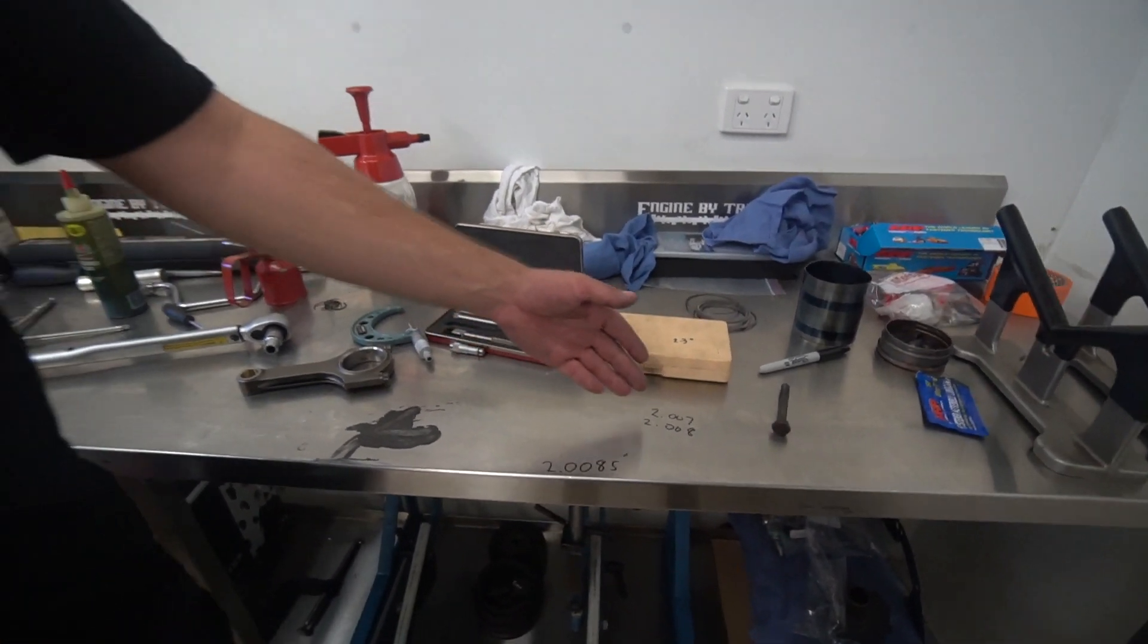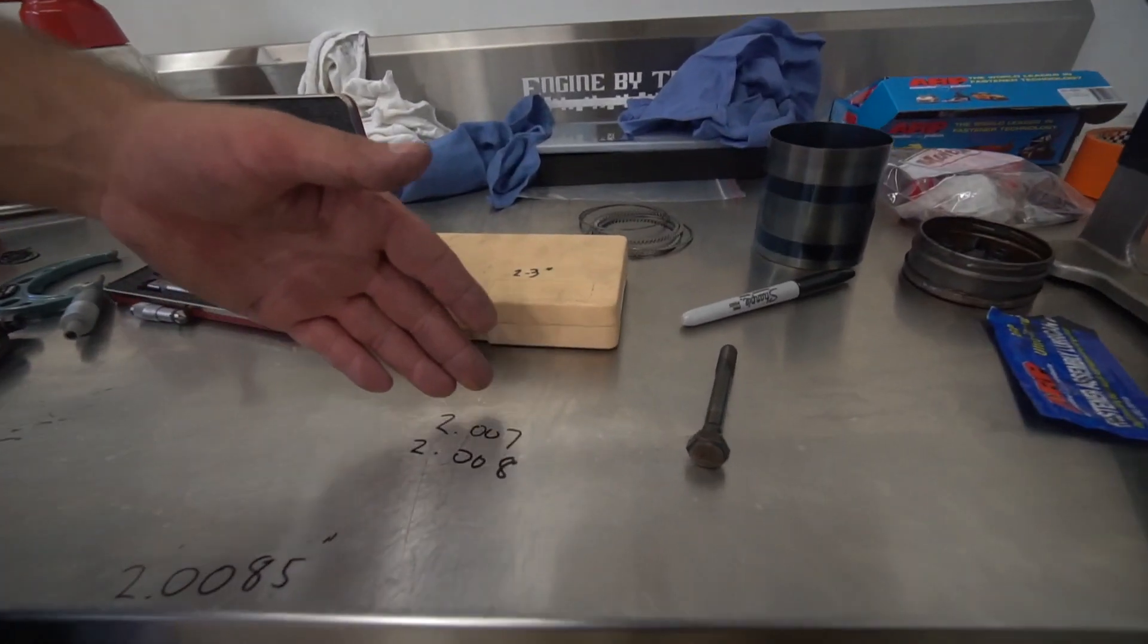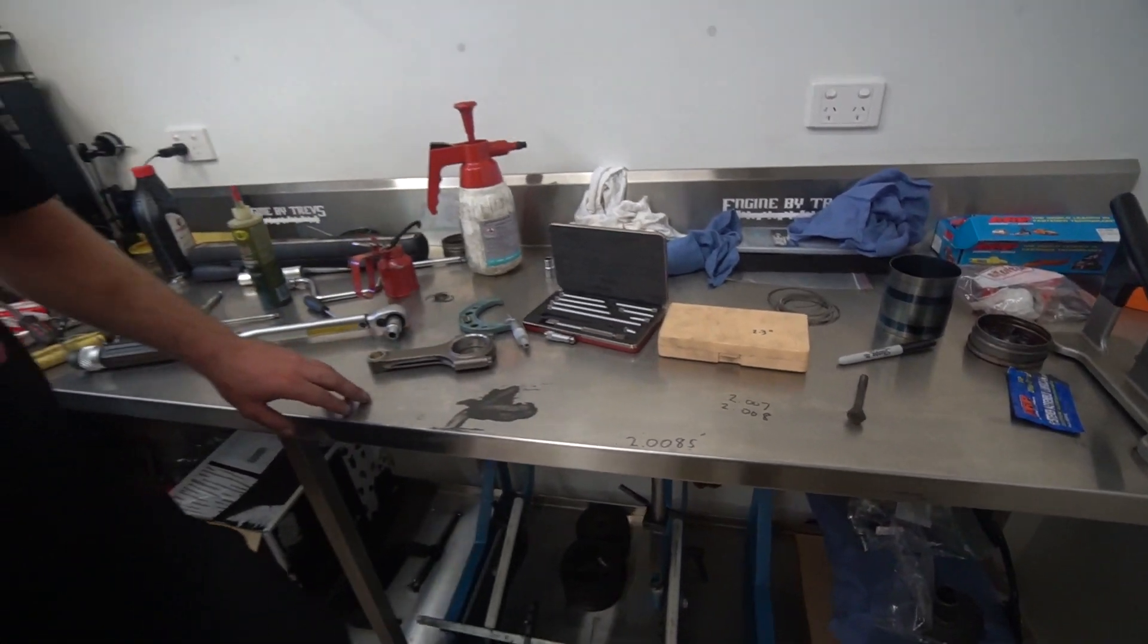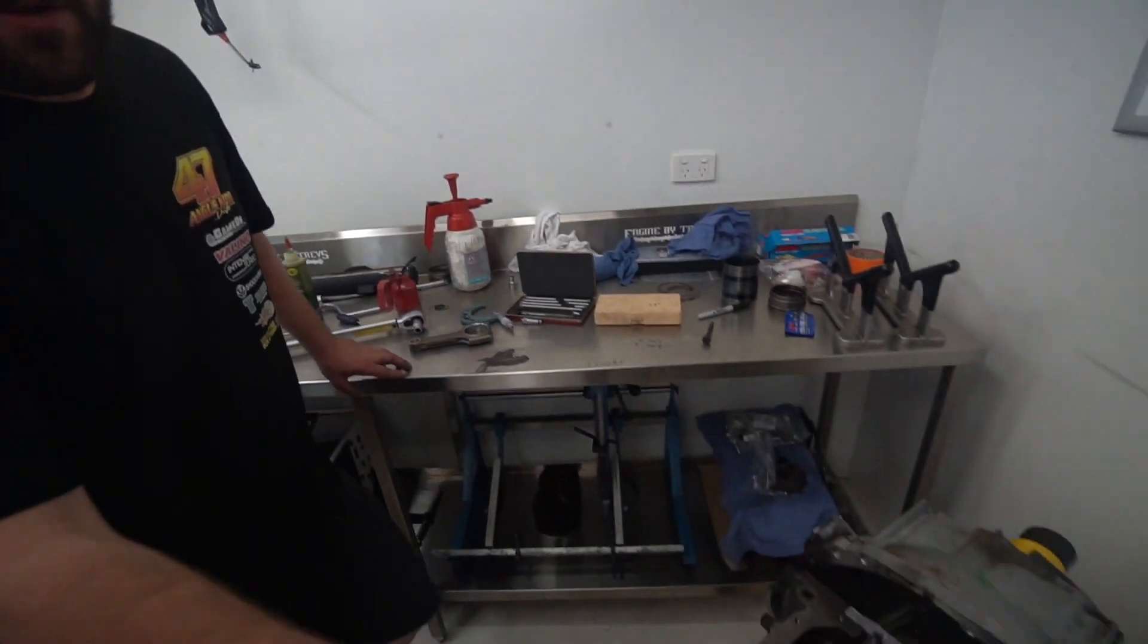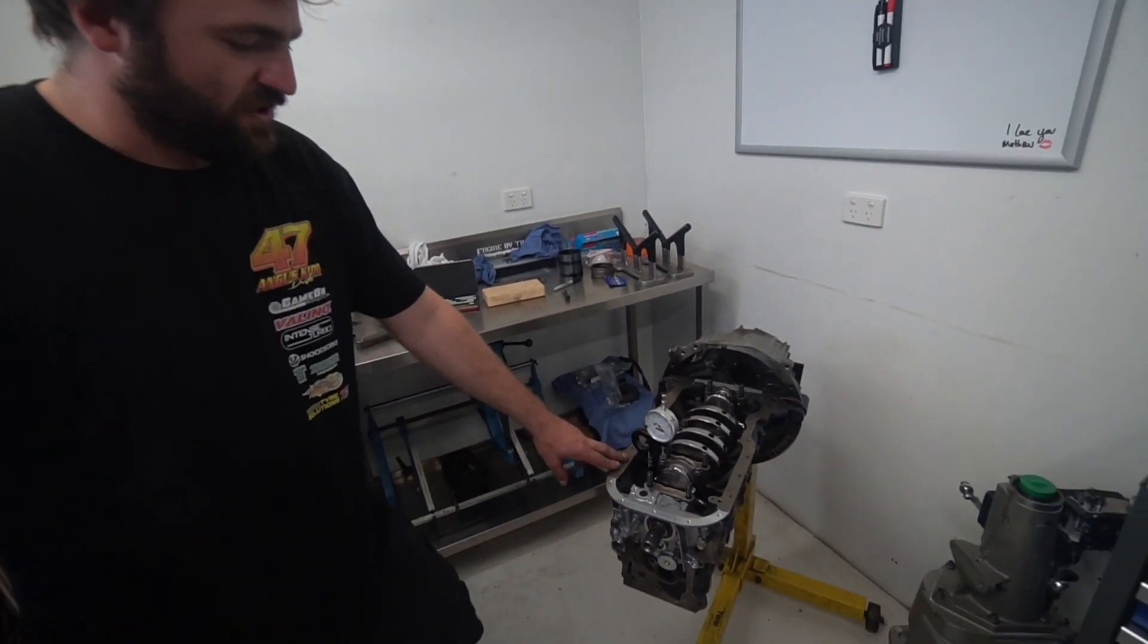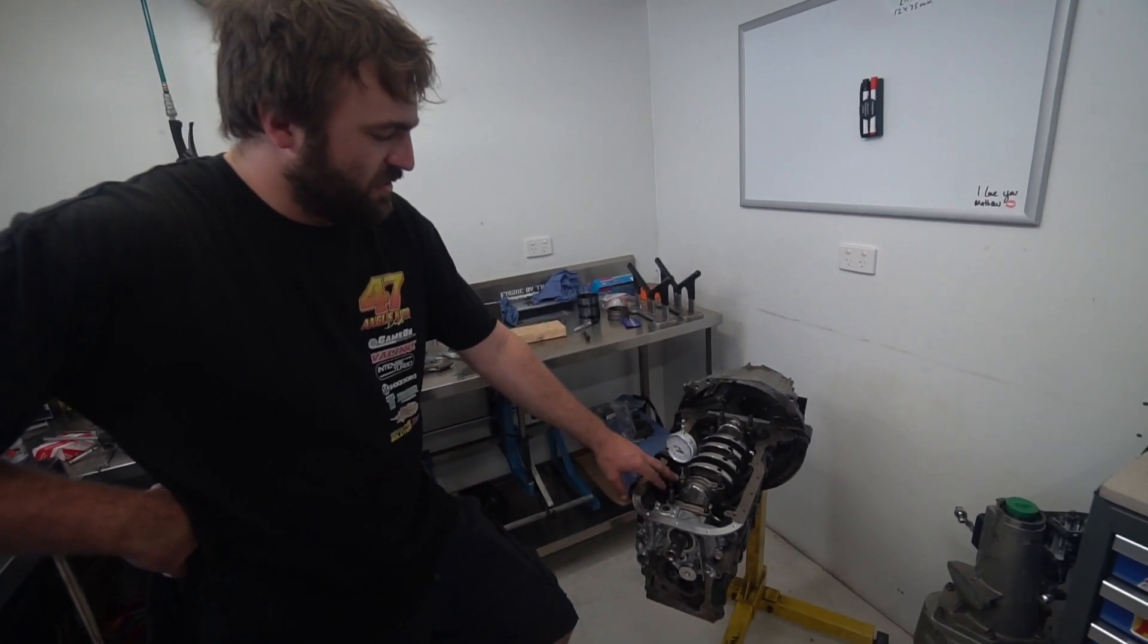Now the factory tolerances have to be 2 inch 8 thou to 2 inch 7 thou, so we were half a thou outside of our range. After cross-referencing to our rod bolt stretch gauge, I have in my head the figure of 5.5 thou stretch on the rod bolt.